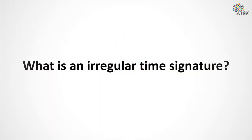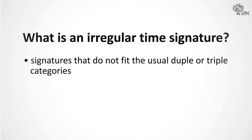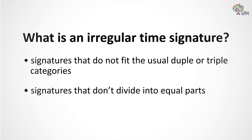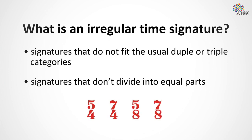What on earth is an irregular time signature? Time signatures that do not fit the usual duple or triple categories — like 4/4, 3/4, 6/8, etc. — and don't divide into equal parts are called complex, asymmetric, irregular, unusual, or odd. 'Irregular' and 'complex' are probably the two most common terms. Some examples include 5/4, 7/4, 5/8, and 7/8. These signatures are common in music from Eastern European traditions and other non-traditional Western classical music.